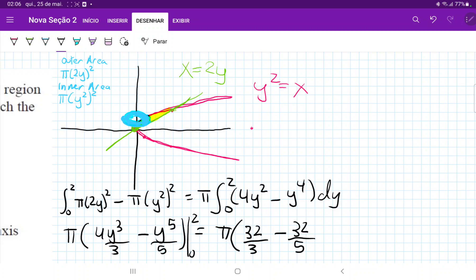And we're not going to evaluate the lower boundary because it's just 0. These terms are going to disappear. So we just have 32 over 3 minus 32 over 5. Let's see what that gives us. Times pi, right? So this is 64 pi over 15 cubic units.